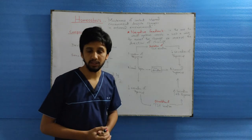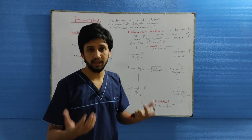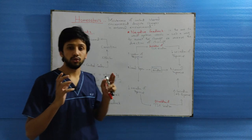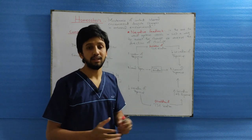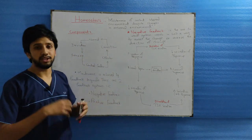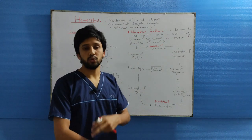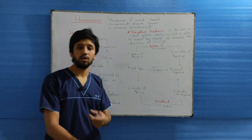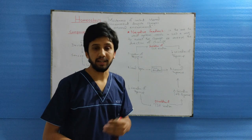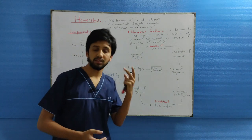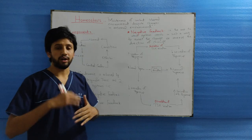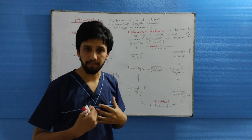Likewise, there is a rise or fall in the temperature of our body. This temperature of 37°C should be maintained. The mechanisms maintaining this are the skin through evaporation, and the hypothalamus, which controls pyrexia — the increase or decrease in our temperature.